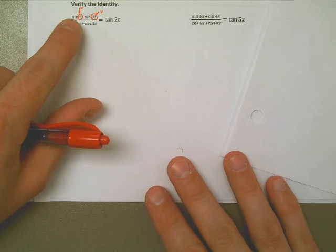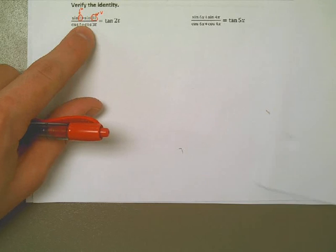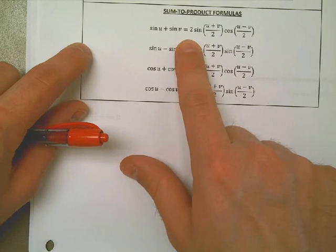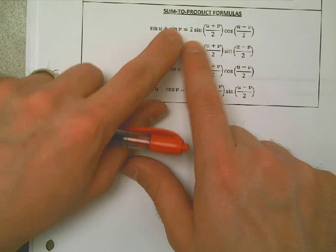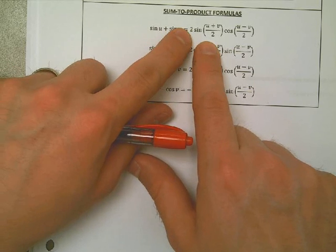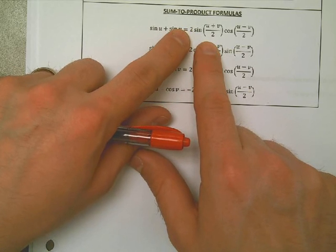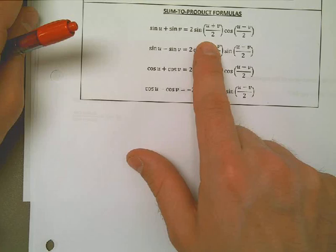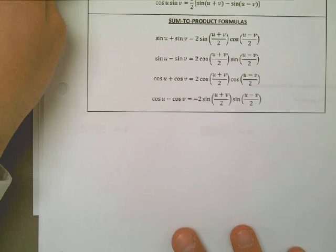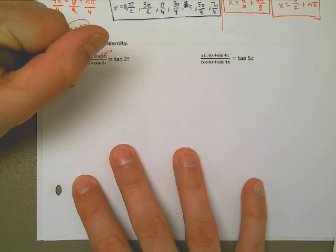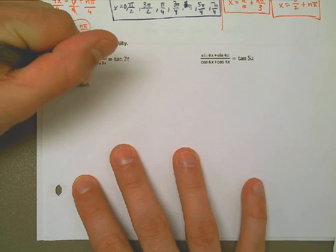And so I can rewrite this as a product. And that's important because tangent is sine over cosine. So I want to turn everything into sines and cosines. 2 sine of u plus v all over 2, cosine of u minus v all over 2. Let's replace u and v with t and 3t. That would be 2 sine of t plus 3t all over 2, cosine of t minus 3t all over 2. There's the numerator.